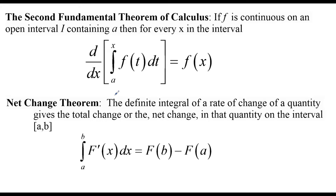The net change theorem: the definite integral of the rate of change of a quantity gives the total change, or net change, in that quantity over the interval. For example, a velocity function is already a derivative because it's distance divided by time. So if you take the integral of the velocity equation and plug in the upper and lower bounds, you find the net change — in the case of a velocity question, that is the total distance traveled.